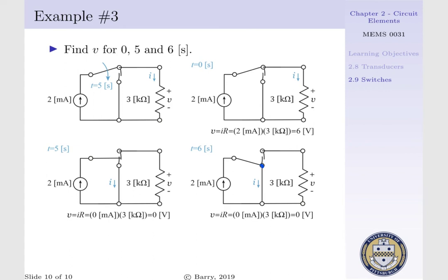Such that our current, once again, will go through the short circuit, and no current will flow through our 3 kilo-ohm resistor. Therefore, the voltage potential across our 3 kilo-ohm resistor at 6 seconds is 0 volts.